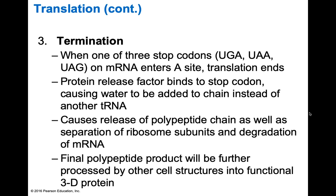The final polypeptide will be further processed by other cellular structures into its 3D protein. Just the strand of amino acids is the primary structure — not yet a functional protein. We still have to make alpha helices and beta sheets, then fold further, and eventually when multiple polypeptide chains come together in their folded forms to create a quaternary globular structure, that's when you have a fully functioning enzyme.